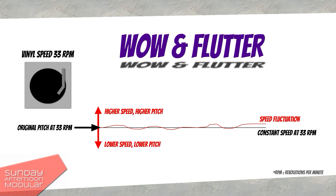If the speed lowers, we have a lower pitch. If the tape goes faster for a short time, we have a higher pitch. Slow changes are called Wow and faster changes are called Flutter. While back in the day people tried to get rid of this, today we use it as an effect to bring some vintage vibes into our crystal clear digital recordings.